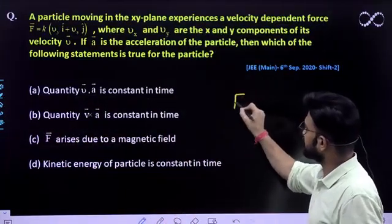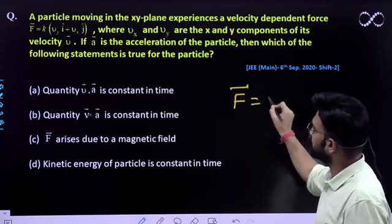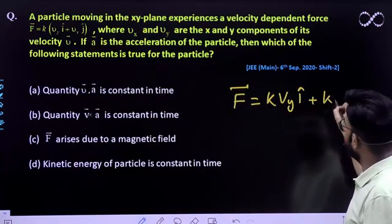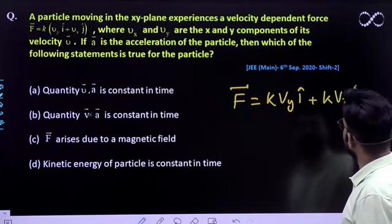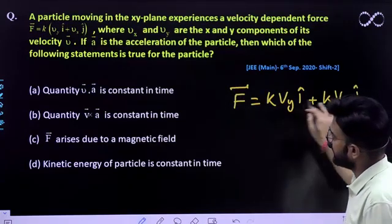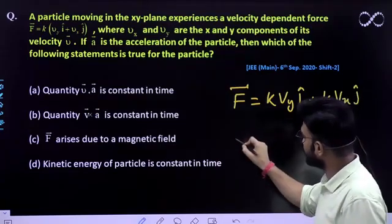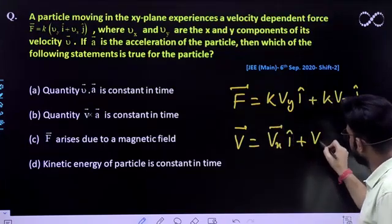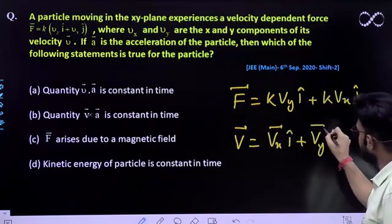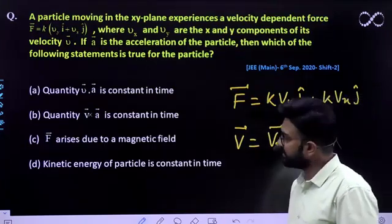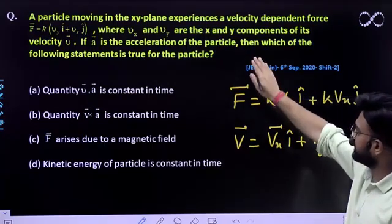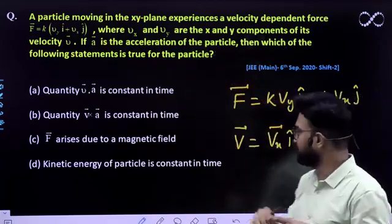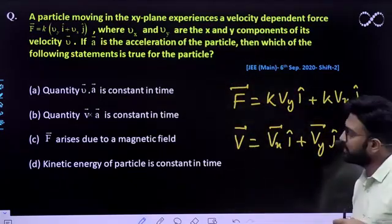We already know that force is how much. Force is kvy i-cap plus kvx j-cap. So this is your force vector. And velocity vector is how much? vx i-cap plus vy j-cap. This is already given to you. Because it's already mentioned here that vx and vy are the x and y component of the velocity v.